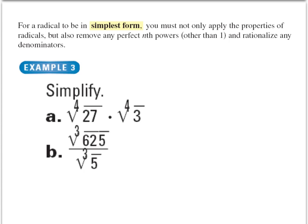Now, I want to talk about simplest form. For a radical to be in simplest form, you must not only apply the properties of radicals but remove any perfect nth powers and rationalize denominators. We talked about rationalizing denominators in the previous chapter. Let's apply them to rational exponents. When we multiply 27 times 3 in this example, we know that we can't simplify these numbers as they are. 27 does not have a perfect fourth root and neither does 3.